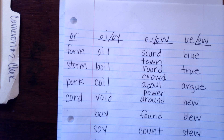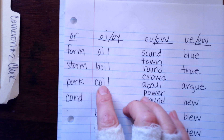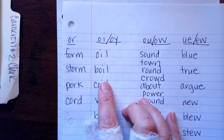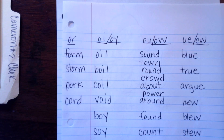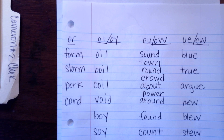The next one is OY and OI make OY. Mom's going to pause the video and you're going to read those ones.